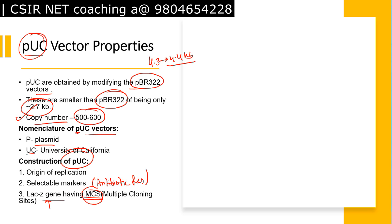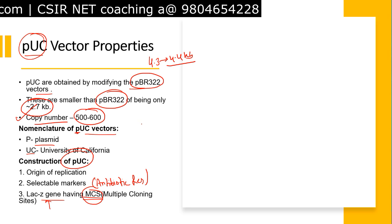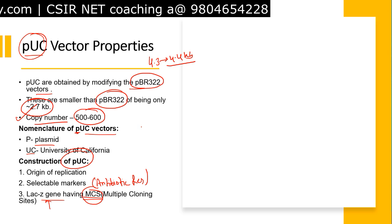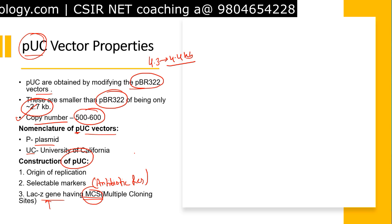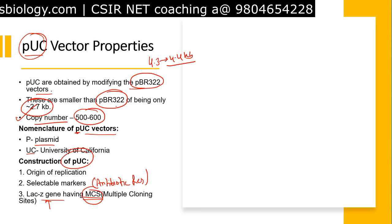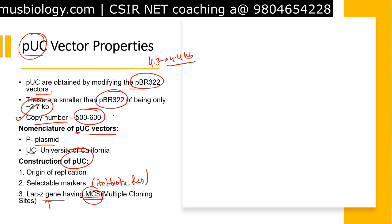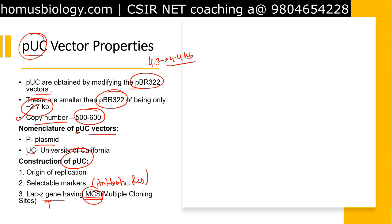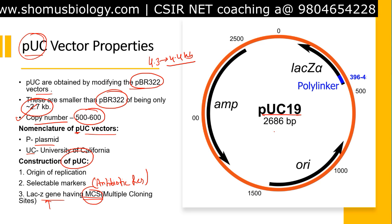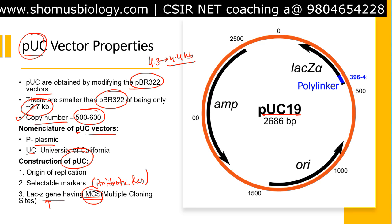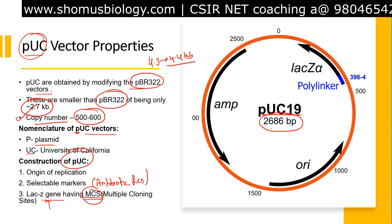Earlier in pBR322, the multiple cloning site is inserted under the antibiotic resistance genes. That's another difference between pBR322 vectors and pUC18/pUC19 vectors. Here is an example of the pUC19 vector — its length is 2686 base pairs, approximately 2.7 kilobases.